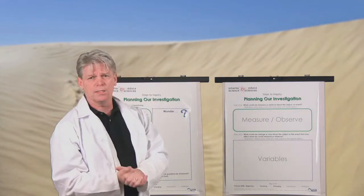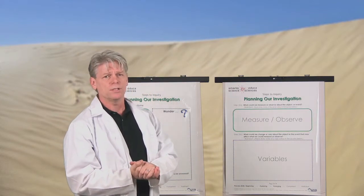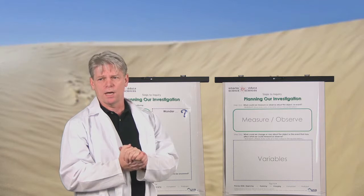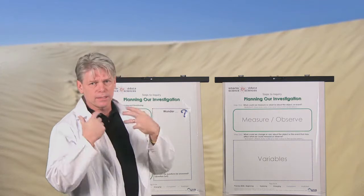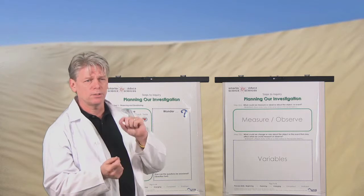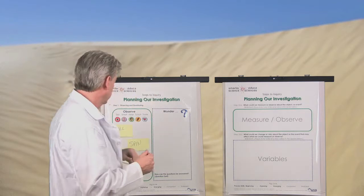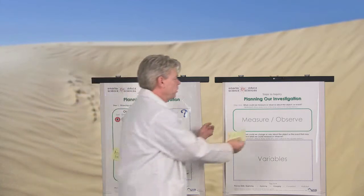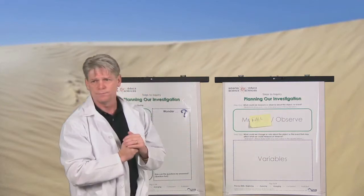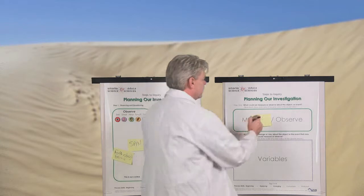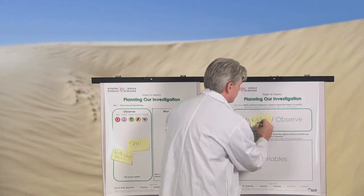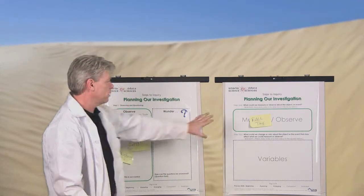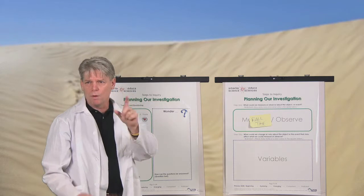What a scientist does is concentrate on one observation at a time — they want to measure one thing. As the teacher, I know where I want them to go: I want them to concentrate on the falling and how much time it takes to fall. Because they've already mentioned falling, we're going to focus our attention on measuring or observing the fall. We can measure that by looking at the time it takes to fall. We move that one post-it over to focus their attention on one variable.